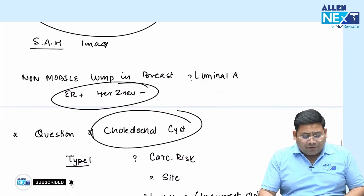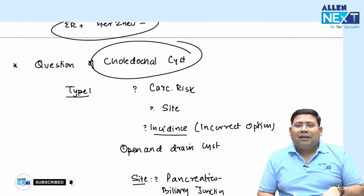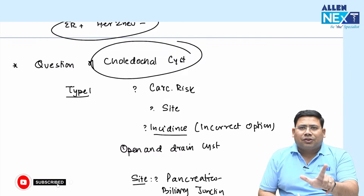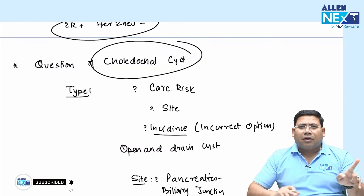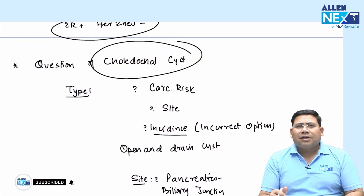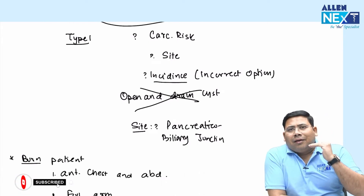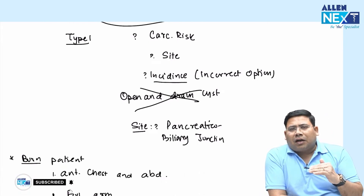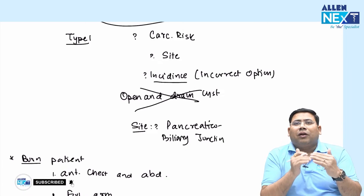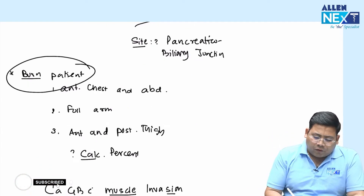A question on choledochal cyst: it is caused by an abnormal biliopancreatic junction (ABPJ), leading to reflux of pancreatic juice causing cystic dilatation. It is a risk for cancer. Management is not open and drain — resect above the level of the confluence of the cystic duct with the common hepatic duct and reconstruct with hepaticojejunostomy (HJ).